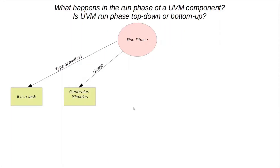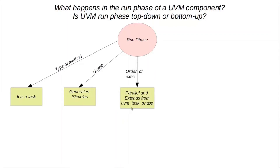The main usage of a run phase is to generate stimulus and also to monitor requests, responses and other such activities. The run phase of all UVM components and sub-components run in parallel and it extends from the UVM task phase class essentially.